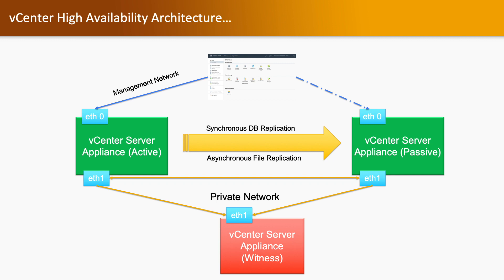vCenter Server High Availability architecture: we have the active node and the passive node. On the active node we have two NICs — Ethernet 0 and Ethernet 1 — and on the passive node we also have two NICs: Ethernet 0 and Ethernet 1. The third component is the witness node, which has one NIC, Ethernet 1. Ethernet 1 of the active node and Ethernet 1 of the passive node communicate within the private network to the witness node. Ethernet 0 communicates with vCenter server clients and vCenter servers, and whichever node is currently active will work as the management network, while the passive node remains in passive mode.